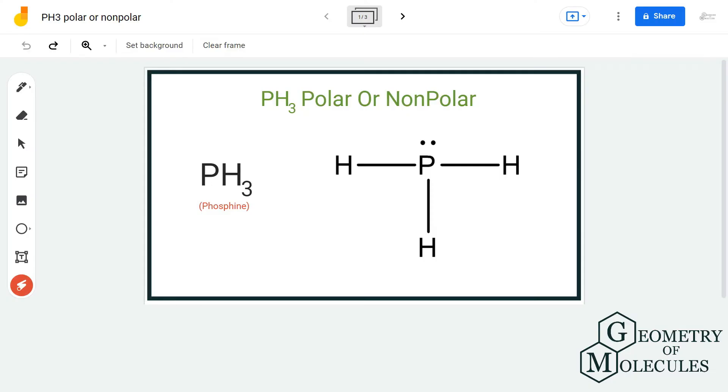Hi guys, welcome back to our channel. In today's video we are going to help you determine if PH3 is a polar or non-polar molecule. It is a chemical formula for phosphine and comprises one phosphorus atom and three hydrogen atoms. To find out whether this molecule is polar or non-polar, we are first going to look at its Lewis structure.